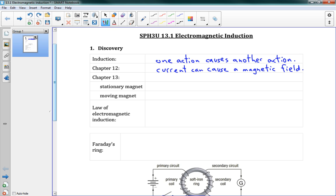But the question in chapter 13 is the other way around. Can we take magnets? Can magnets induce an electric current? That's our question here.